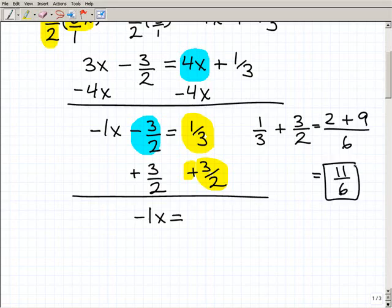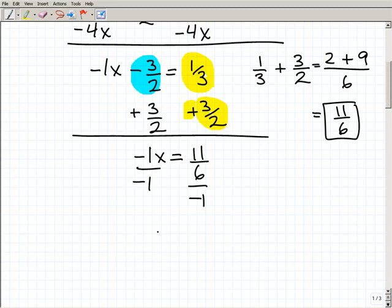So if you have 11 6 as your answer, I congratulate you. You're all set. So 1 third plus 3 halves, 1 third plus 3 halves, was 11 6. So now to solve for x, am I done? I'm almost done. I have negative x. I want positive x. So I have to divide both sides of the equation by negative 1, and that gives me x equals a negative 11 over 6.